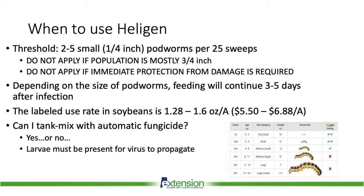One of the most important things about this product is when do we use it. Our threshold for Helogen is much lower than it is with synthetic chemistry. We're going at a threshold of two to five small podworms per 25 sweeps. So what do we call a small podworm? Ideally we want to use this product when the population is around a quarter of an inch in length.